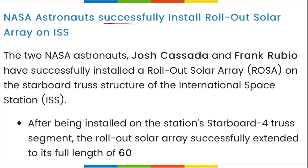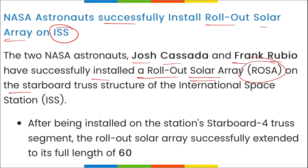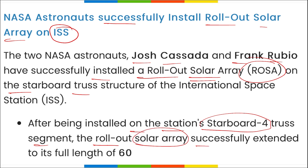Two NASA astronauts — Josh Cassada and Frank Rubio — successfully installed a rollout solar array (ROSA) on the starboard truss structure of the International Space Station. Once installed, the rollout solar array successfully extended to its full length. This array was delivered by SpaceX Dragon cargo plane and will provide up to 30% more power to the ISS, totaling 120,000 watts of electricity during orbital daytime.